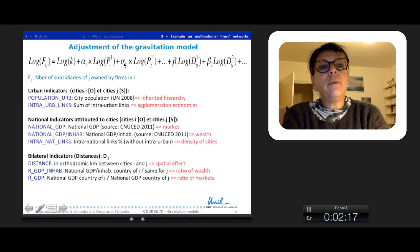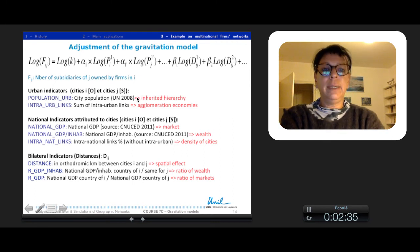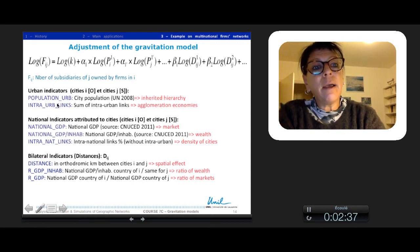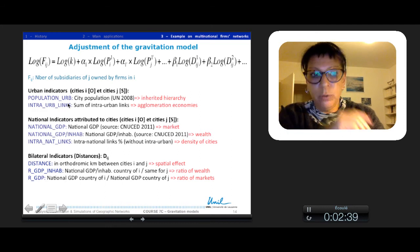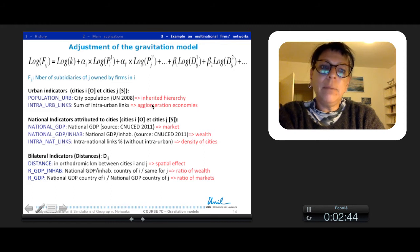With multiple regression, I used different urban indicators for city I, which are the owners, and city J, which are the subsidiaries. I used the urban population which reflects the inherited hierarchy, and the intra-urban linkages, the sum of intra-urban linkages revealing the agglomeration economies.